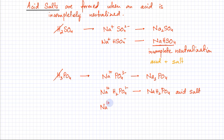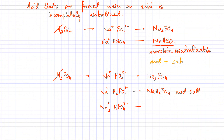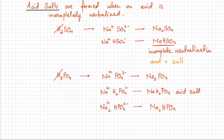Or I can make another acid salt by replacing two of the H⁺ ions, leaving only one H⁺ remaining. The formula would be Na₂HPO₄. Since there is still one H⁺ remaining, it can still act as an acid, so this too is an acid salt.